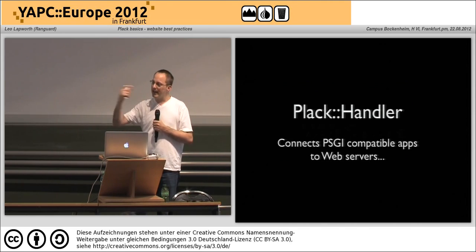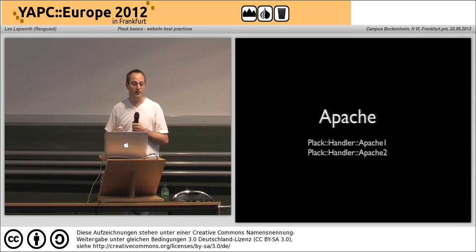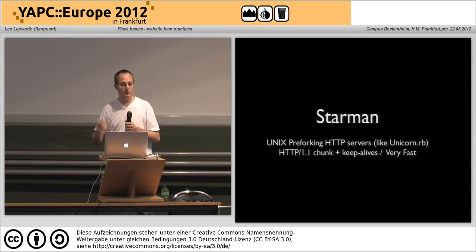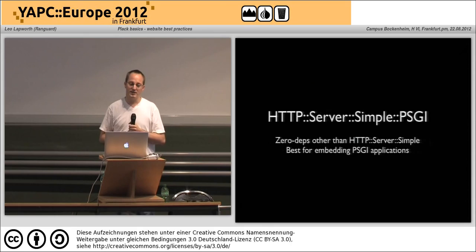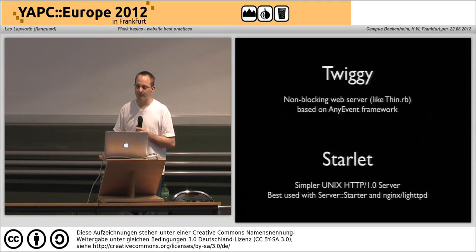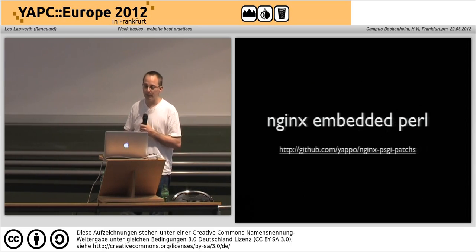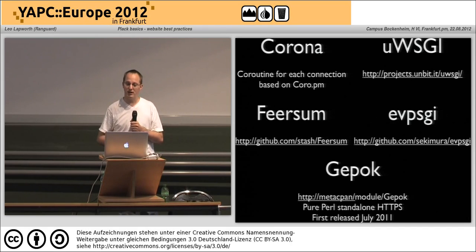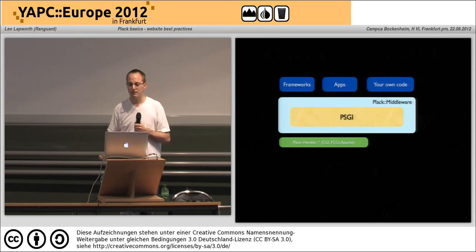Plack::Handler — which connects applications to different types of web servers — has handlers for FastCGI, for Apache 1 and 2, for Starman which is a pre-forking HTTP server and very fast, HTTP::Server::Simple::PSGI which has very few external dependencies and is really useful if you're trying to deploy something quickly to an unknown environment, then there's Twiggy for non-blocking, Starlet...